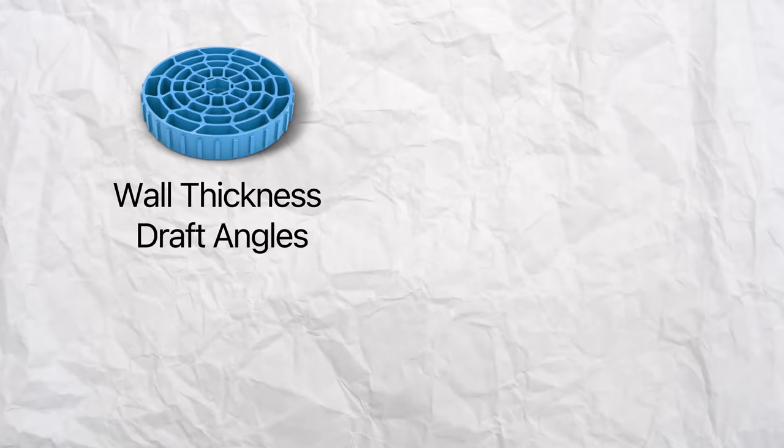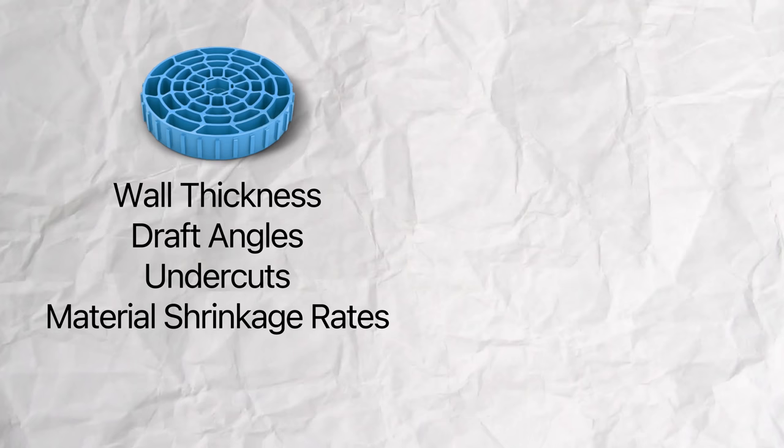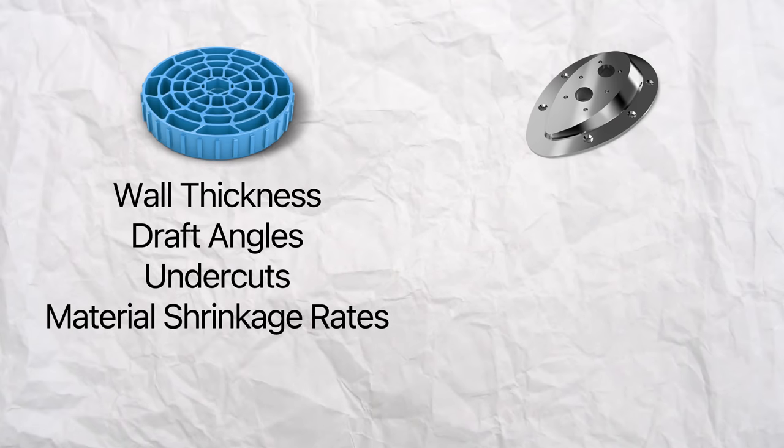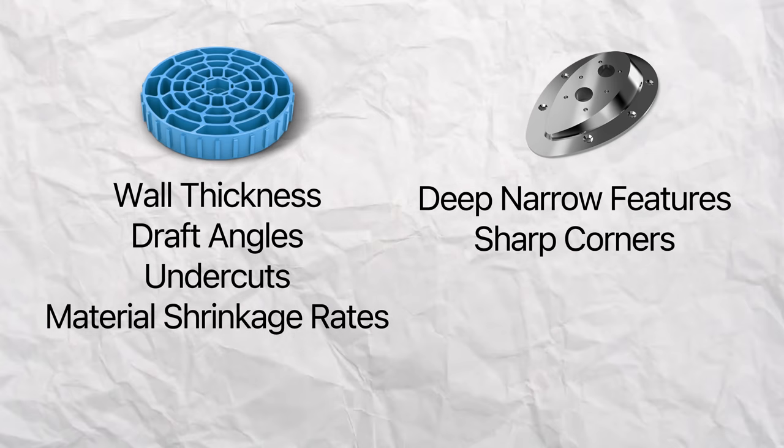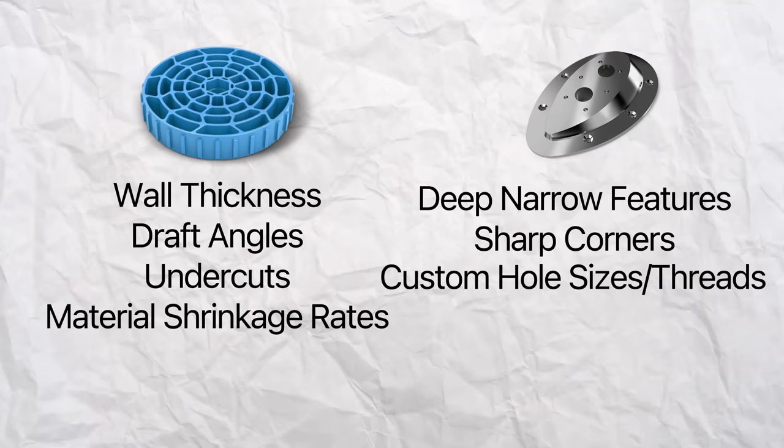As an engineer, you should be well versed in design for manufacturing or DFM principles. For example, if you're designing a CNC milled or plastic injection molded part, you will need to apply the rules of thumb and design guidelines for each particular manufacturing process. In a nutshell, a plastic injection molded part should consider things like uniform wall thickness, draft angles, undercuts, and material shrinkage rates. While a CNC milled part should avoid deep narrow features, sharp corners, custom hole sizes, and threads.